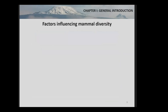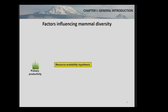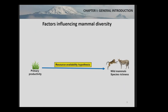Next, I would like to introduce the factors which might influence mammal and dung beetle richness, starting with mammal richness. Resource availability is often considered the major driver of animal diversity. The resource availability hypothesis states that energy limits the occurrence of species and that more productive ecosystems can harbor more and larger populations than less productive ecosystems. Primary productivity is often taken as a proxy for energy or resources, and under this hypothesis we expect a positive impact on mammal richness.